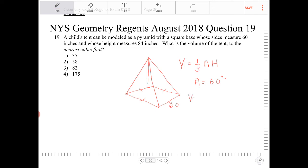To find the volume, it's simply one-third times 60 squared times 84. All we have to do is enter that into the calculator.